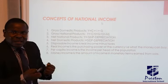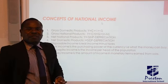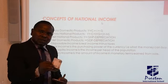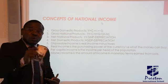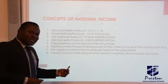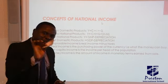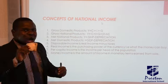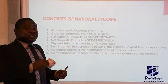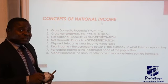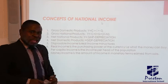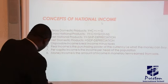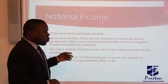Disposable income is talking about the money you have left after tax has been deducted. Real income is the purchasing power — the efficiency of the money you have. Look at this 1,000 euros — what can you use this money to buy? That is what we are talking about with real income. Per capita income is talking about the money you have left to spend, and that will determine your standard of living and your way of life. Money income is the amount of income in monetary terms from what you are able to offer for sale.